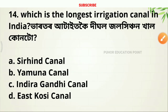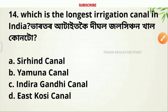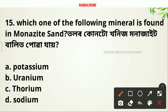Which is the longest irrigation canal in India? This is a very important question. Next question: Which one of the following minerals is found in monazite sand? Option C — Thorium.